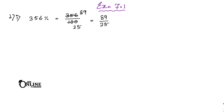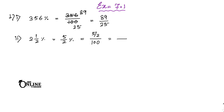You can also convert it into a mixed fraction. Next, the second one: 2 whole 1 by 2 percent, which means 5 by 2 percent. So 5 by 2 percent equals 5 by 2 divided by 100, which gives 5 by 200, equal to 1 by 40.